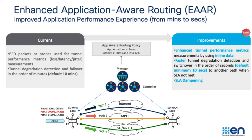By using inline data, we're able to improve our accuracy of measurements like loss, latency, and jitter. We are able to provide faster convergence in terms of switching the traffic to a better path in the order of seconds, and we are able to provide dampening. In this video, we'll do a feature deep dive about enhanced application-aware routing, EAR.